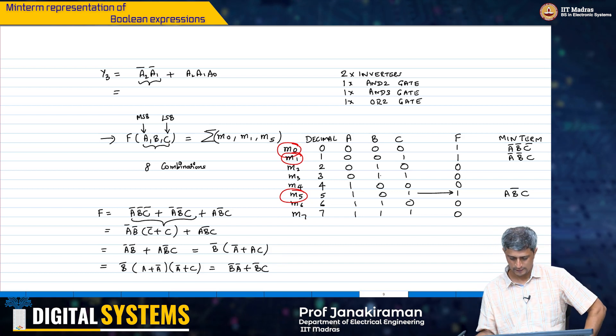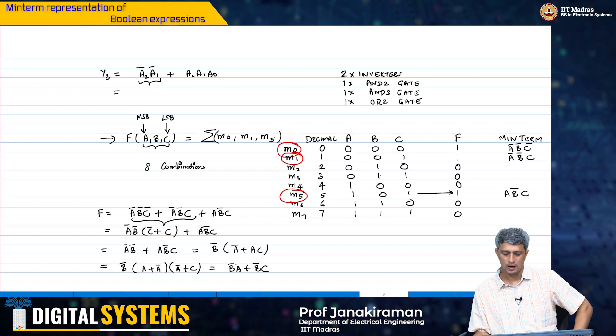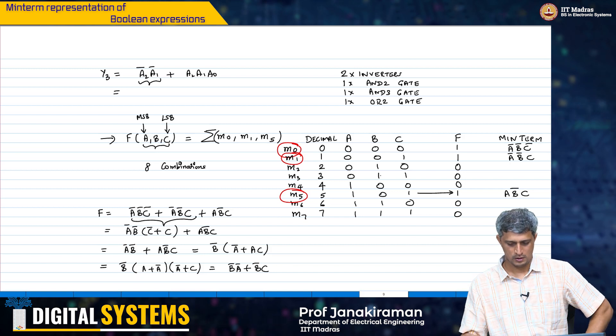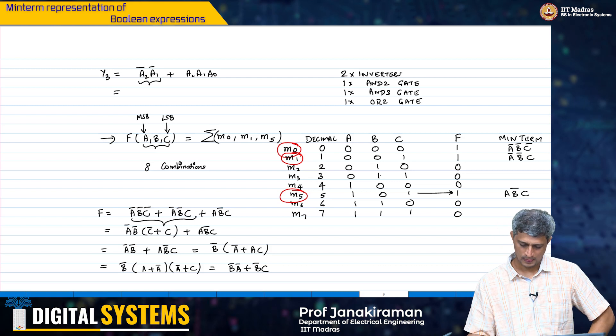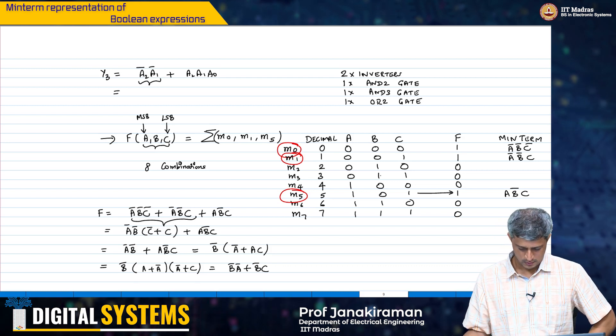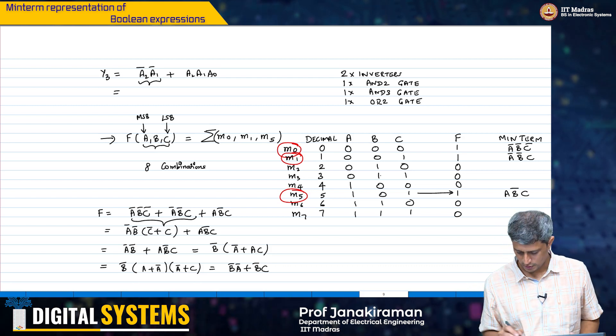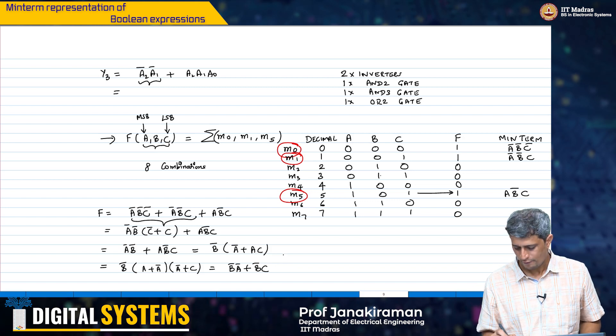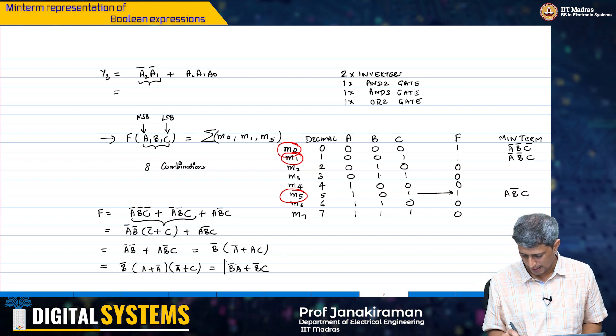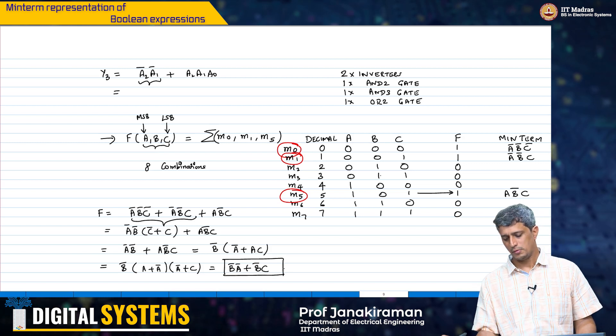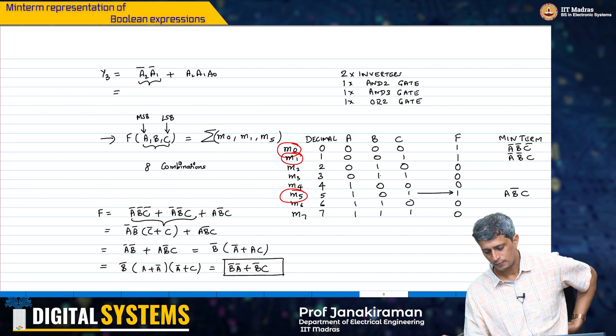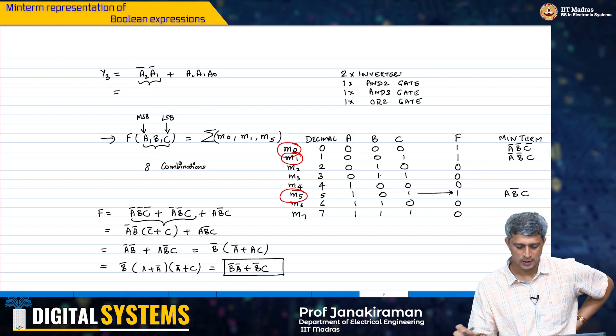So, this is b bar into a plus a bar into c. So, this therefore, this is equal to b bar a bar plus b bar into c, because a plus a bar is 1. So, effectively that is what we have: b bar into c.